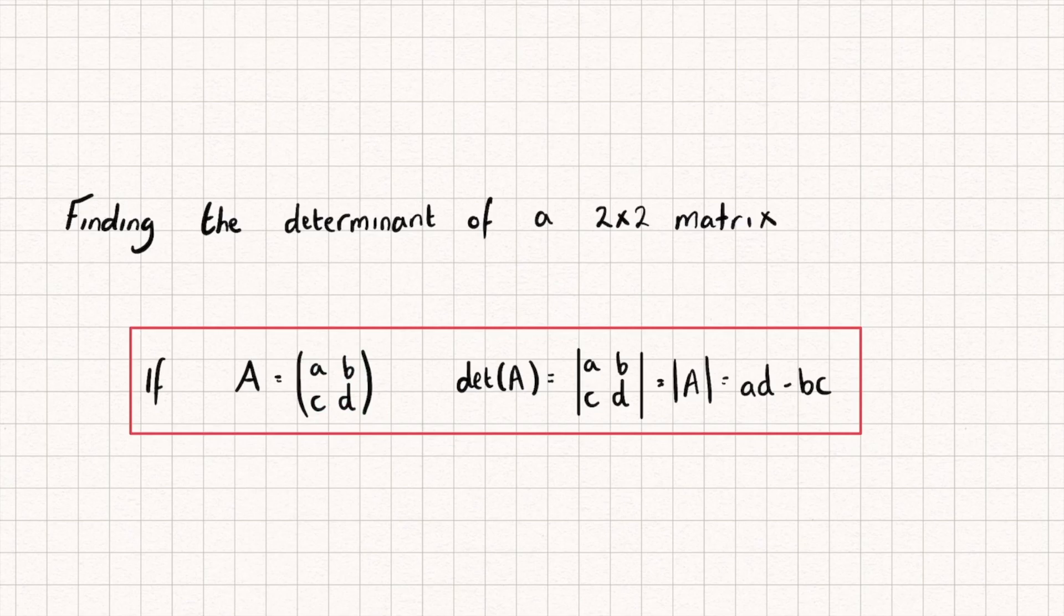Now if we find the determinant and it's equal to 0, then we say our matrix is singular, and what this will mean is that it doesn't have an inverse, and we'll see this later on. If the determinant is not equal to 0, then we say the matrix is non-singular.